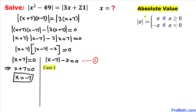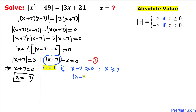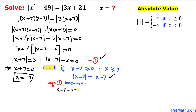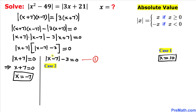Applying the absolute value definition to equation 1, in Case 1 we consider x minus 7 greater than or equal to 0. In this case the absolute value of (x minus 7) equals positive (x minus 7). So equation 1 becomes: x minus 7 minus 3 equals 0. Combining like terms gives x minus 10 equals 0, so x equals positive 10.